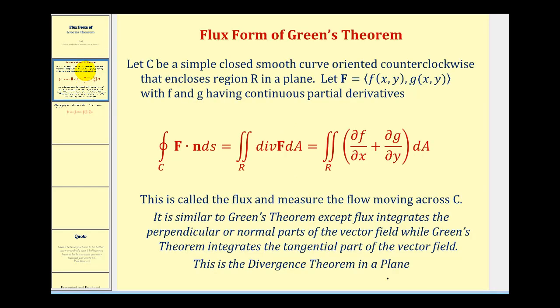So if C is a simple closed, smooth curve, oriented counterclockwise that encloses region R in a plane, where vector field F is equal to angle bracket F comma G,